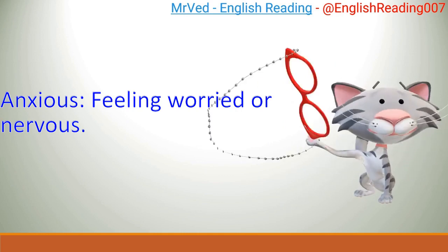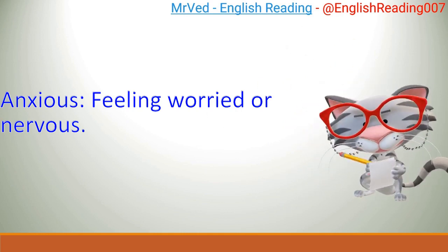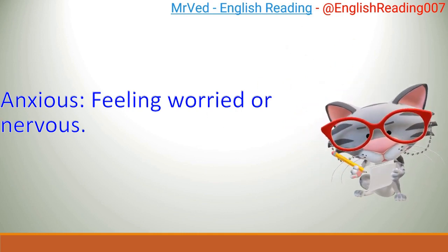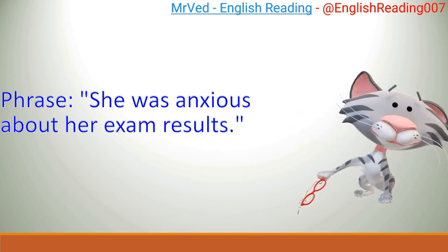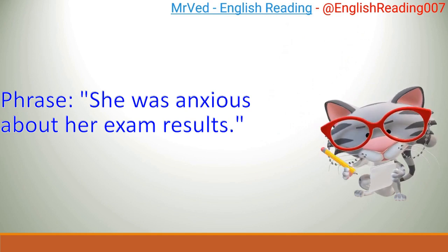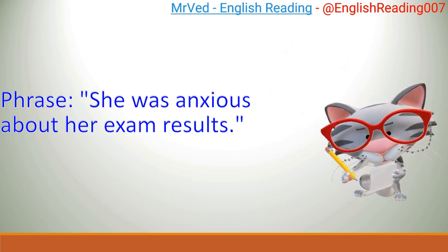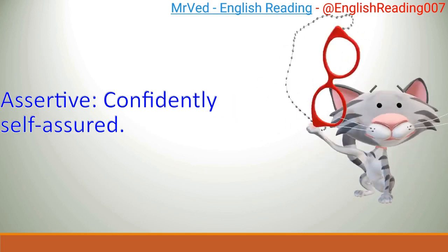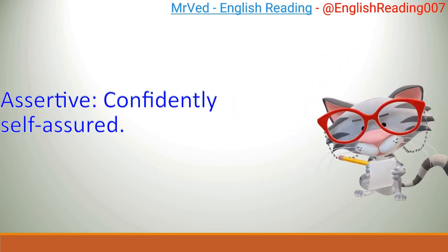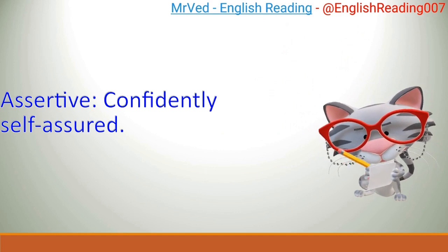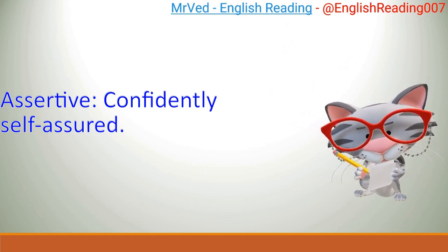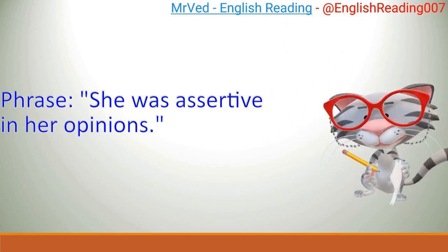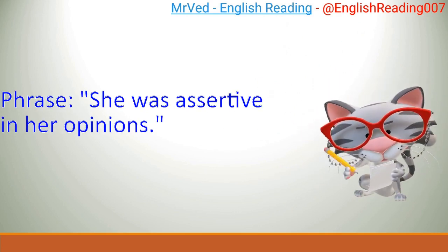Anxious: feeling worried or nervous. Example: She was anxious about her exam results. Assertive: confidently self-assured. Example: She was assertive in her opinions.